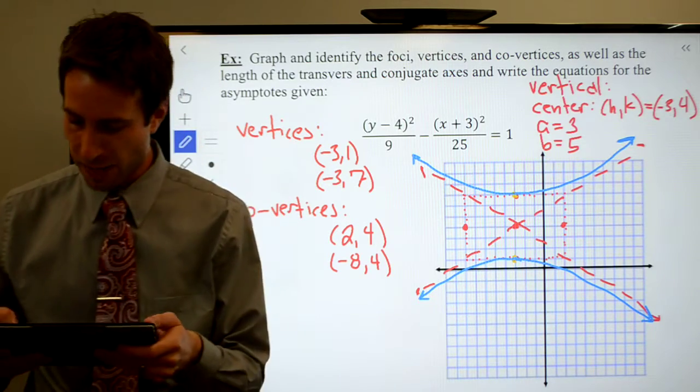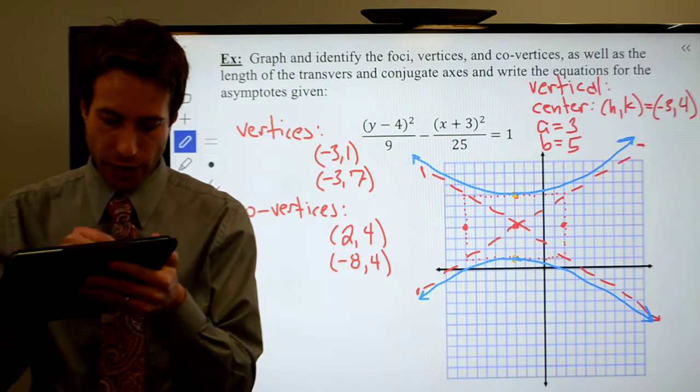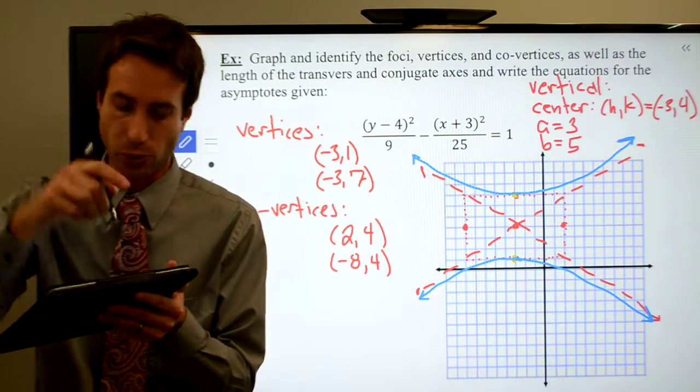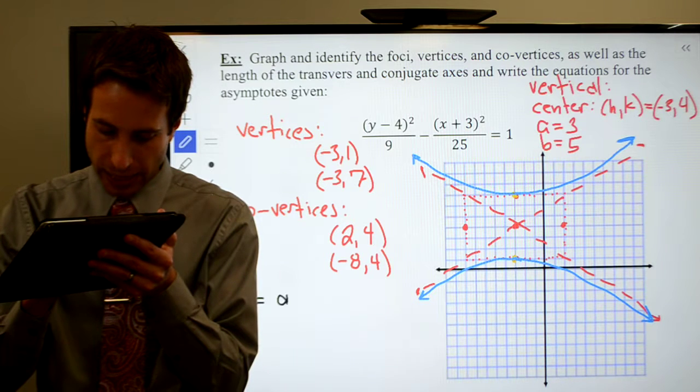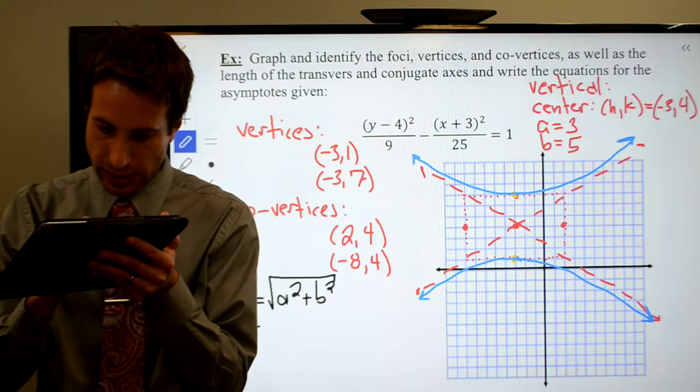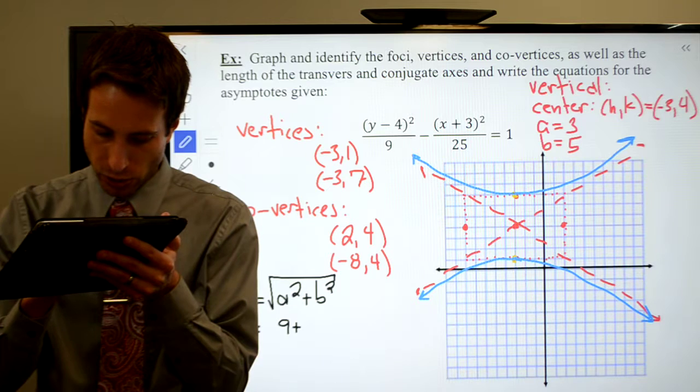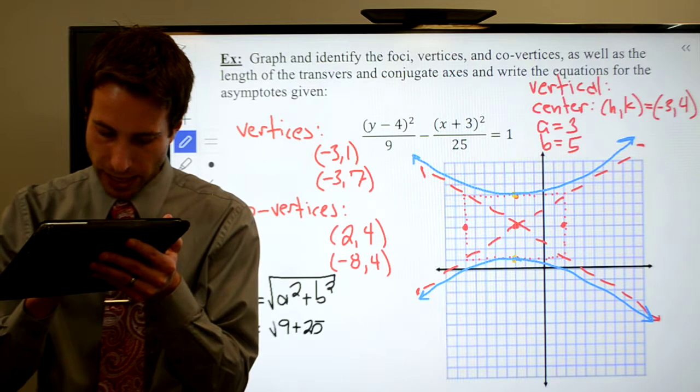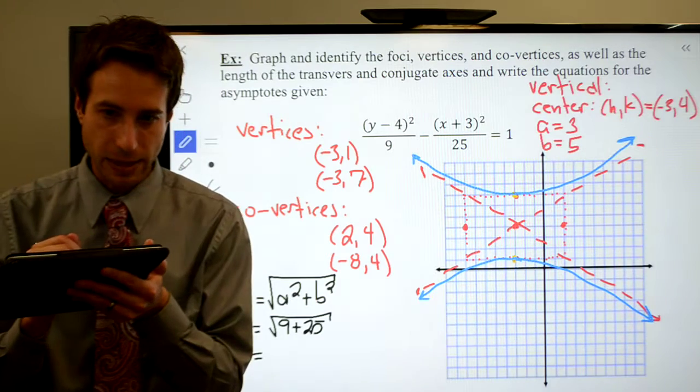I almost forgot about the foci. That would have been bad. So remember the foci you're going to get by doing, it's right on the formula sheet. It is c is equal to a squared plus b squared, take the square root. So c is equal to a squared is 9, b squared is 25. Add those guys together. What's that give me? 34.